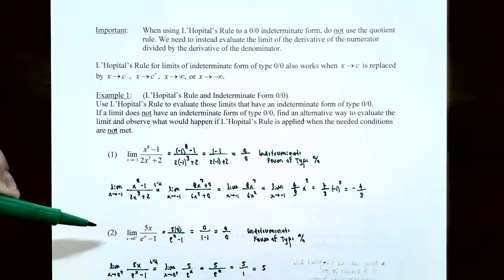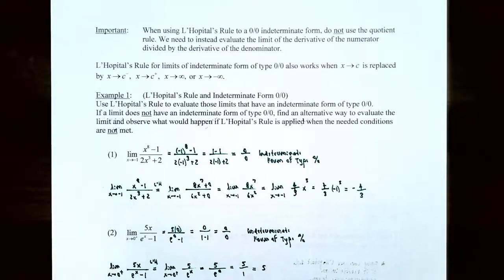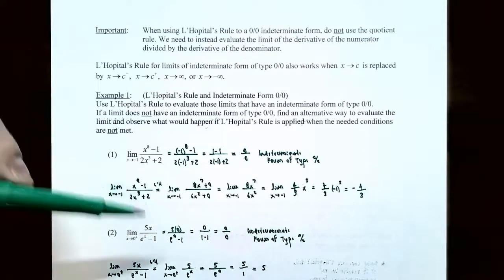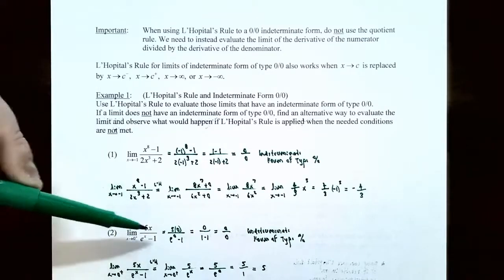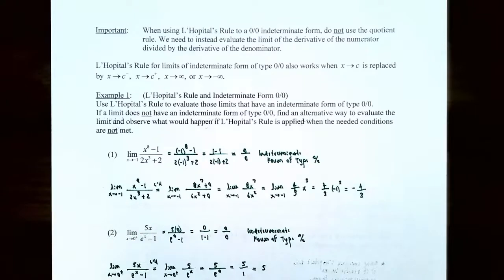Number two: find the limit as x approaches 0 from the right of 5x divided by (e^x - 1). Let's check for an indeterminate form. Plugging in x = 0: the numerator gives 5(0) = 0, and the denominator gives e^0 - 1 = 0. So we get 0/0, which is an indeterminate form of type 0/0. We can use L'Hôpital's rule.